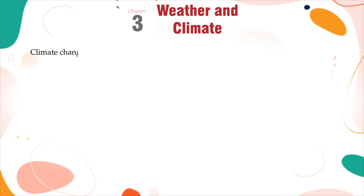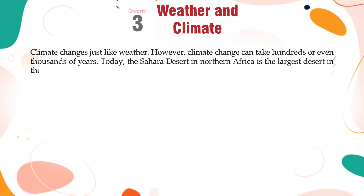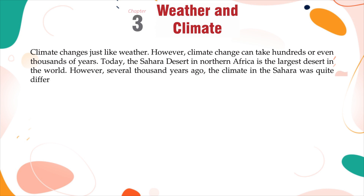Climate change is just like weather. However, climate change can take hundreds or even thousands of years. Today, the Sahara Desert in Northern Africa is the largest desert in the world. However, several thousand years ago, the climate in the Sahara was quite different — this green Sahara experienced frequent rainy weather.